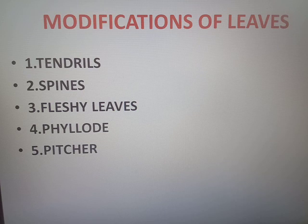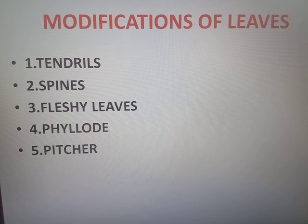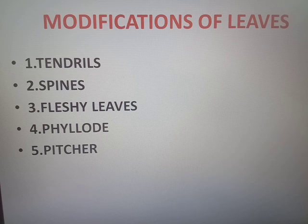The first modification is tendril. In the pea plant, the leaflet of the compound leaf is modified into a tendril.